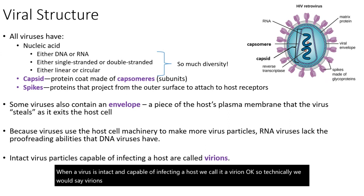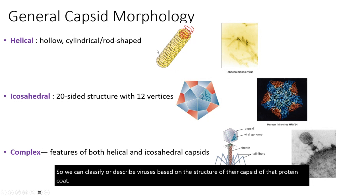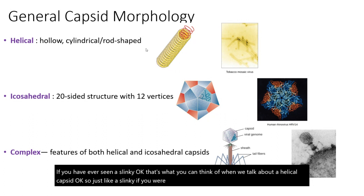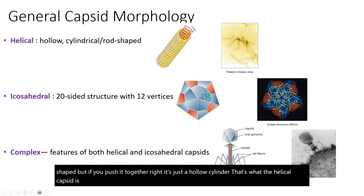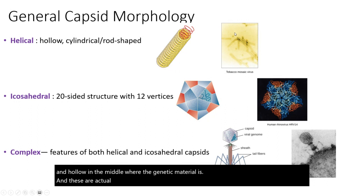We can classify viruses based on the structure of their capsid. If you've ever seen a slinky, that's what a helical capsid looks like — it's a spirally shaped, hollow cylinder. The red in the diagram represents the genetic material, and the yellow circles are the protein capsid. Helical capsids are cylindrical and hollow in the middle where the genetic material sits. These are actual pictures of a helical virus — this is tobacco mosaic virus.